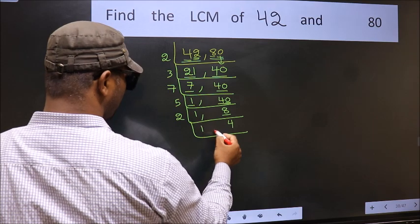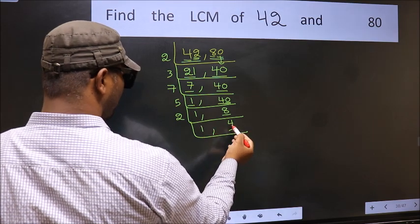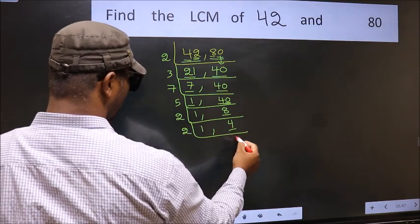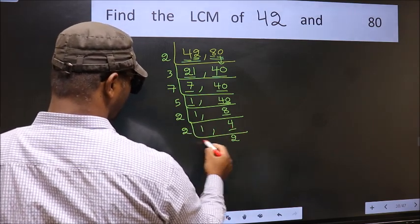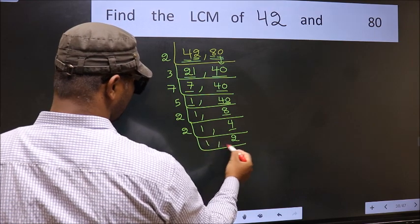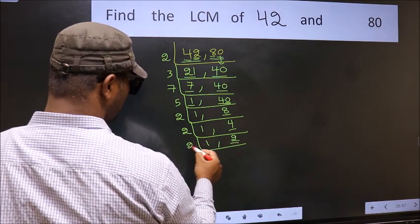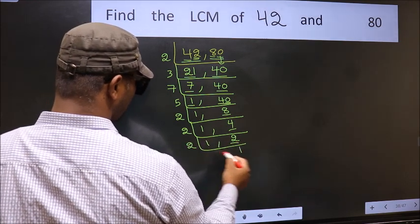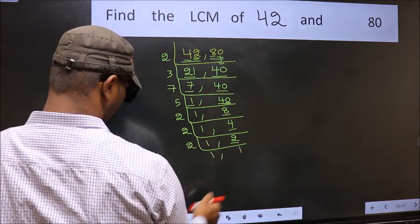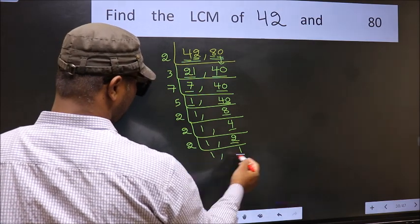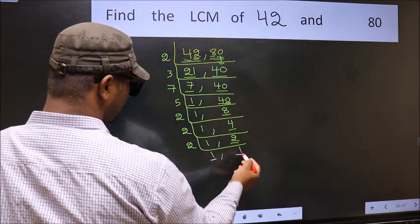Now we have 4 — 2 times 2 is 4. Now we have 2. 2 is a prime number, so 2 times 1 is 2. So we got 1 in both places.